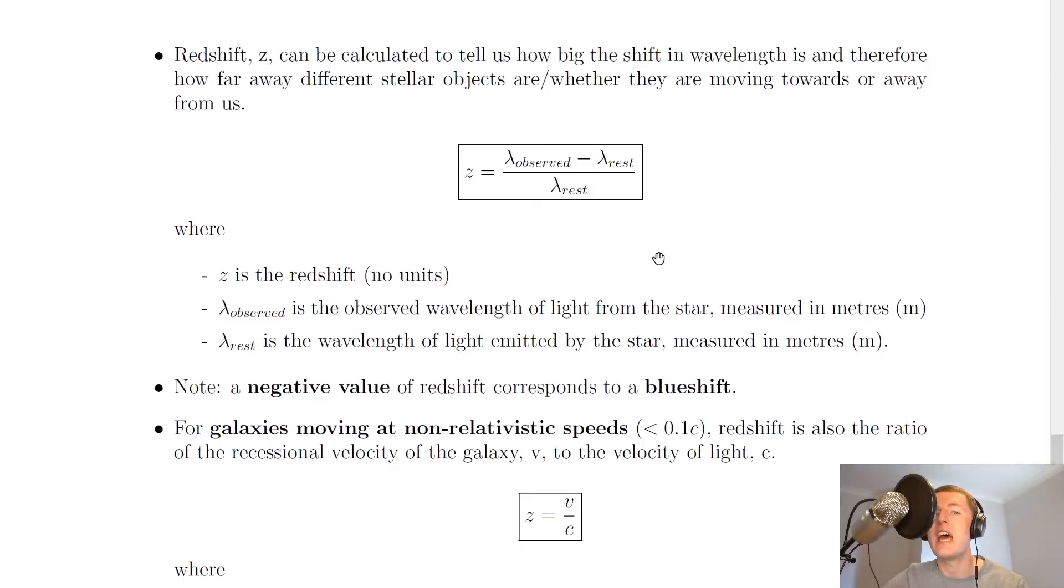And one last thing to point out in this equation is that often in questions you'll need to decide which wavelength is lambda observed and which wavelength is lambda rest if you're given two wavelengths. A key way to distinguish between these is that lambda observed will usually be the wavelength observed from a distance, the wavelength of spectral lines observed in the lab, where it's really far away from the source of the light itself. Whereas lambda rest is going to be in the frame of reference of the source itself, right next to the actual source of light. So lambda observed will be the one that is shifted, whereas lambda rest is the one that is not shifted. Or another thing to remember is that if you've got redshift instead of blueshift, lambda observed will just be a larger number than lambda rest.